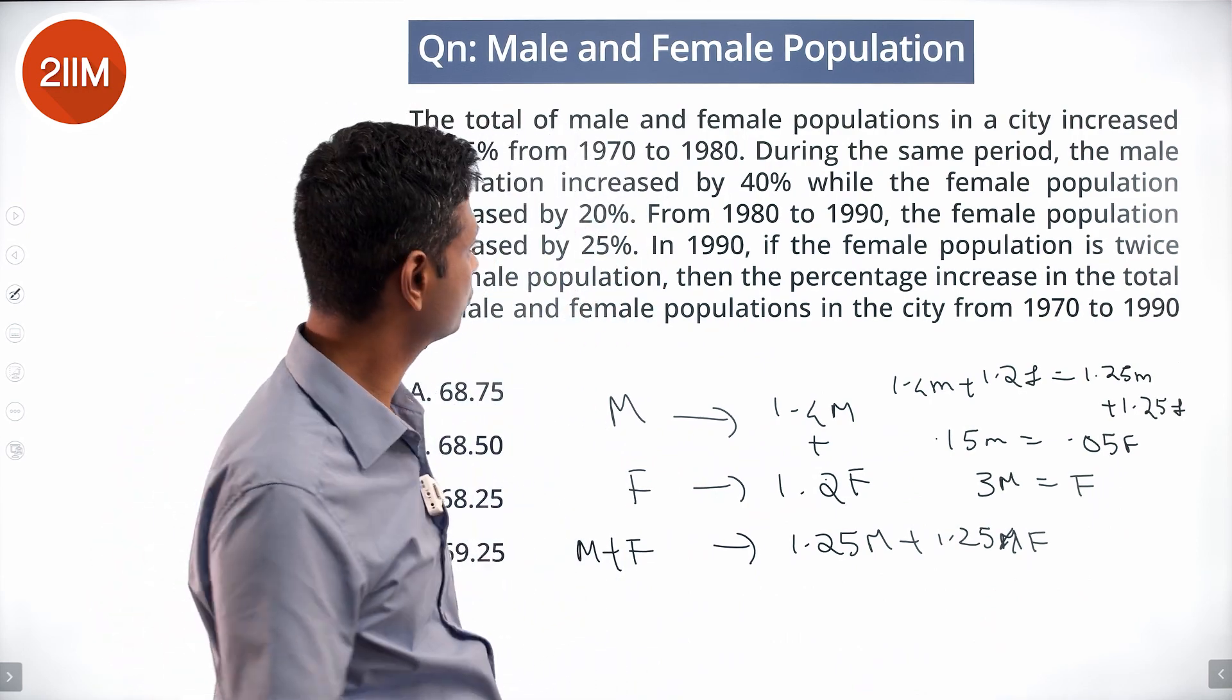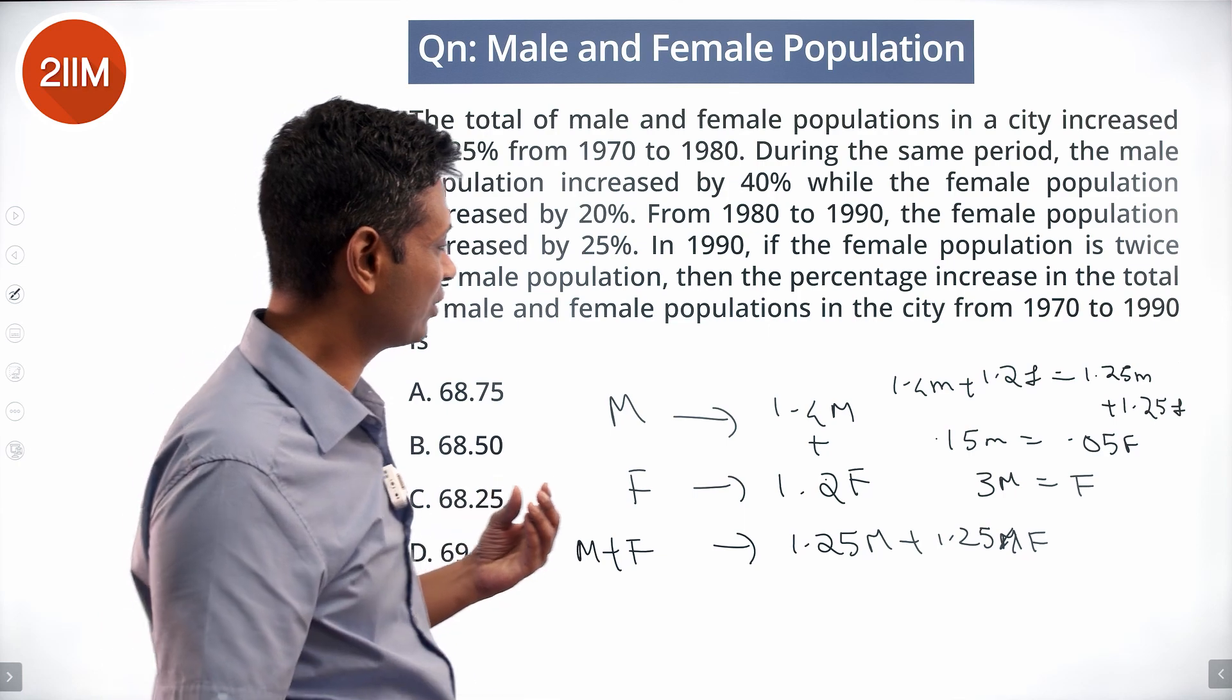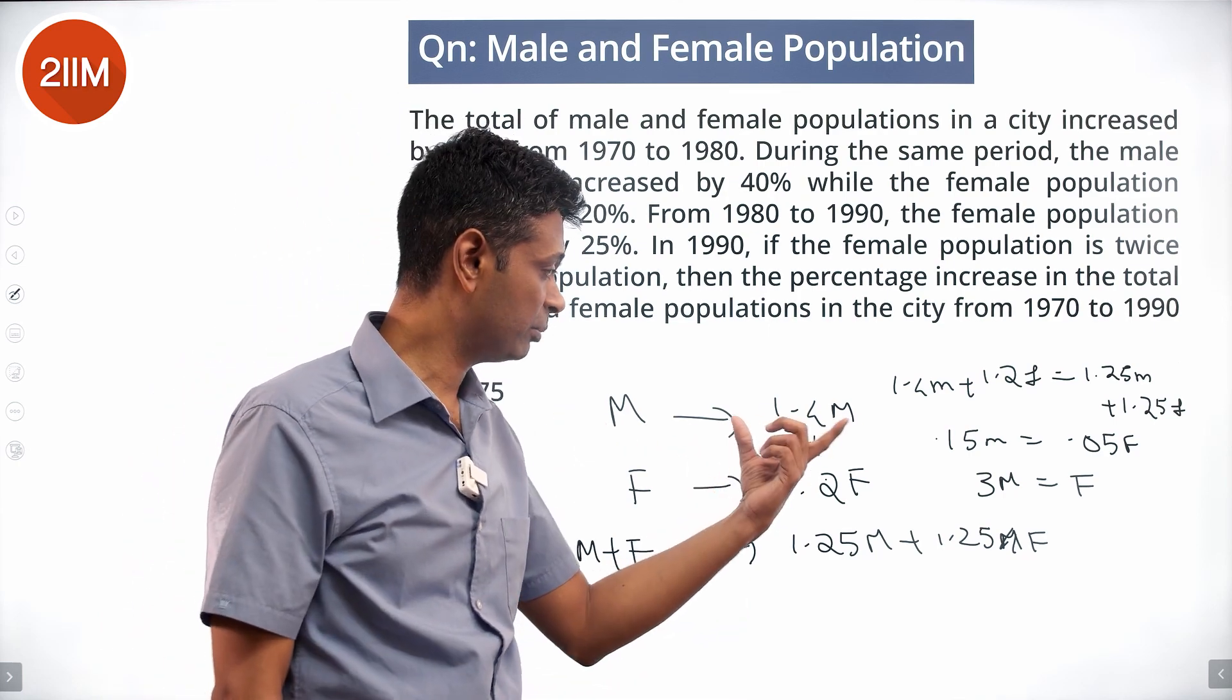With this figure, it can also be treated as a mixture: 40% and 20% mixed to give 25%.